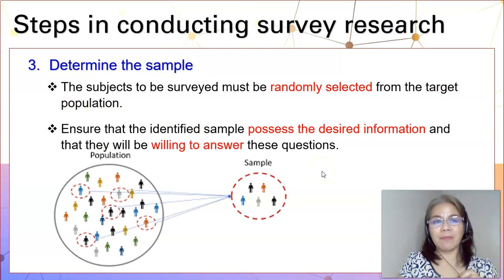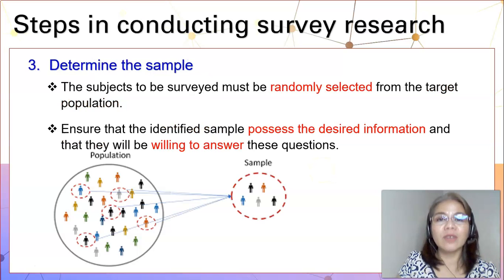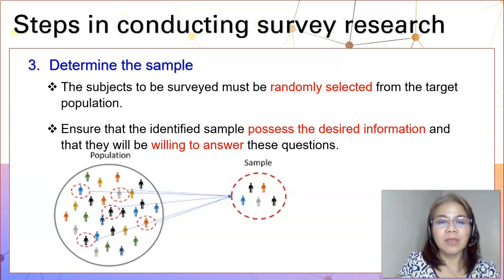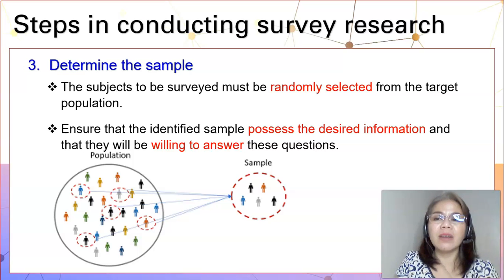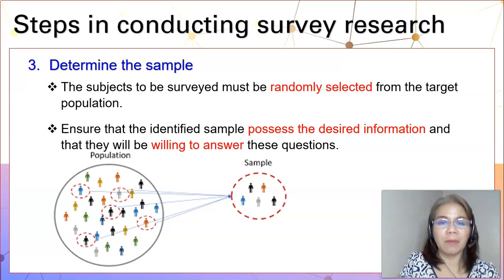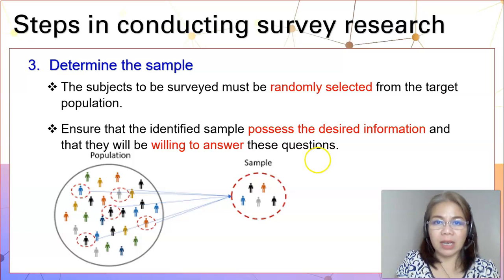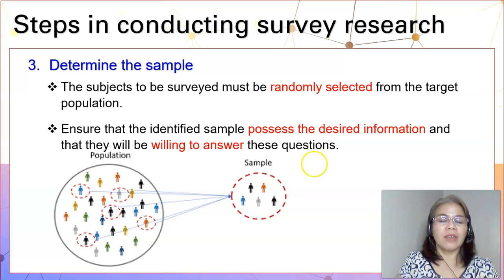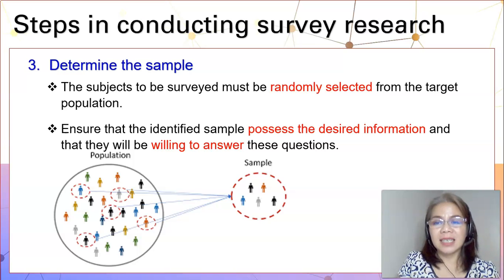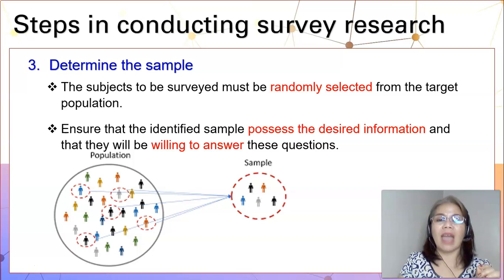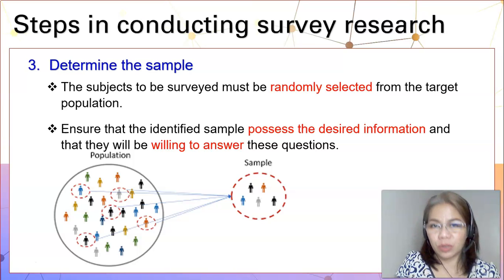The next step is to identify or determine the sample. The sample refers to the subjects to be surveyed and they must be randomly selected from the target population. It is important that you, as a researcher, must ensure that the identified sample possesses the desired information and that they are willing to give answers to the research questions.